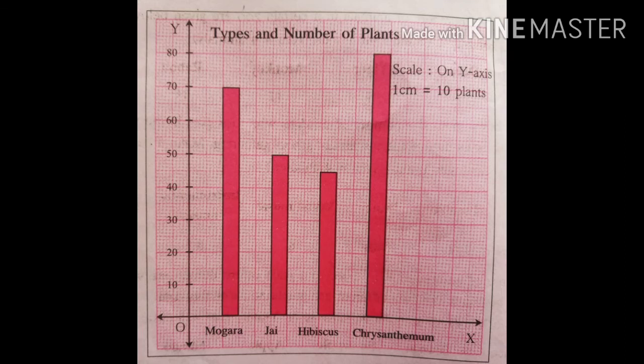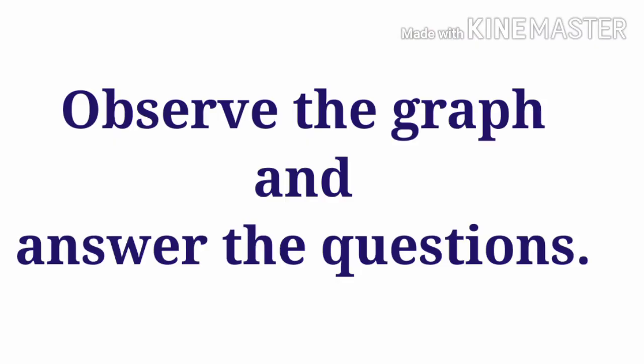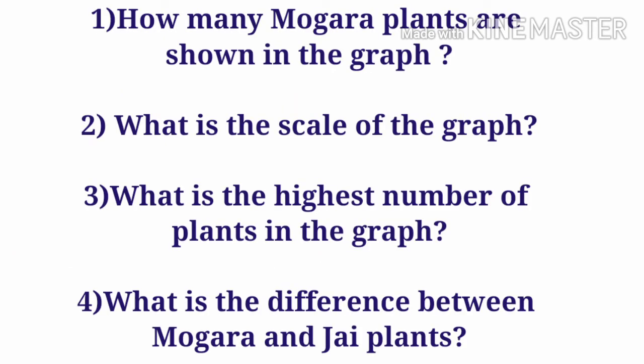Now, observe this graph and answer the questions given below. First question: how many Mogara plants are shown in the graph? Second question: what is the scale of the graph? Third question: what is the highest number of plants in the graph? Fourth question: what is the difference between Mogara and Jai plants?